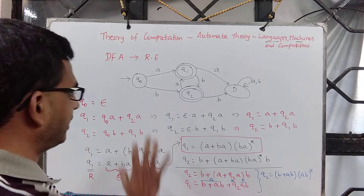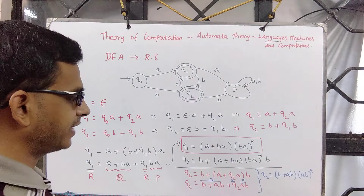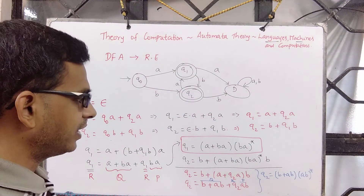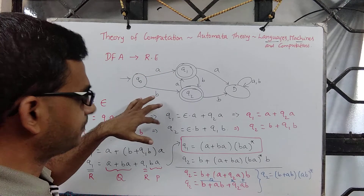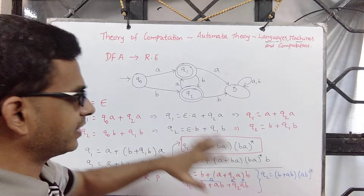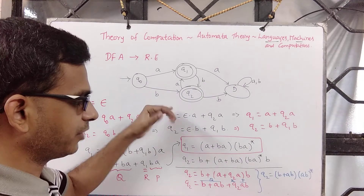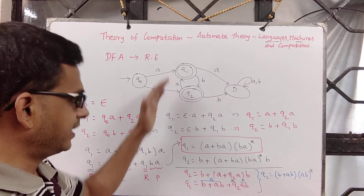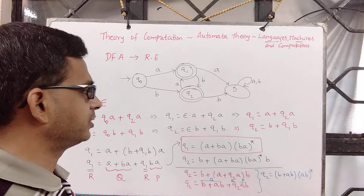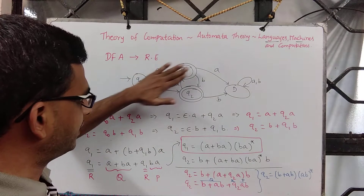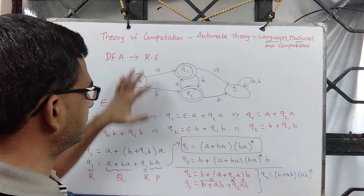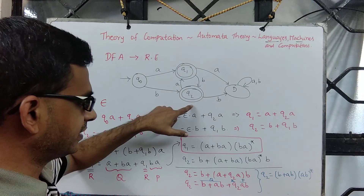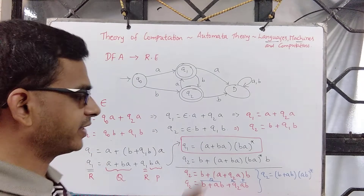This tells us that when a machine has multiple final states, we find the solution to each final state. The regular expression for the automaton is the solution to the final states — but if there are multiple final states we take the union of all of them. All strings accepted at Q1 are part of the language, and all strings accepted at Q2 are also part of the language.